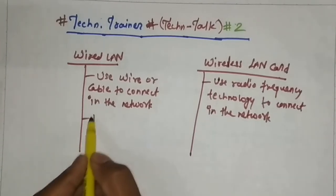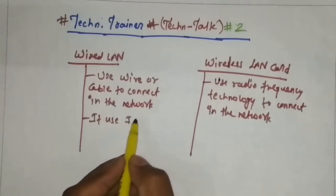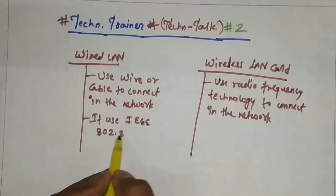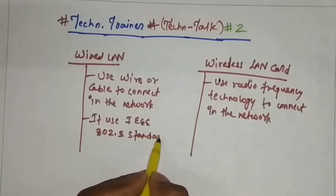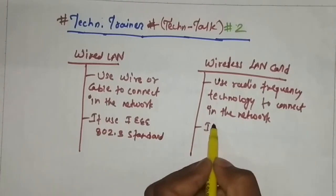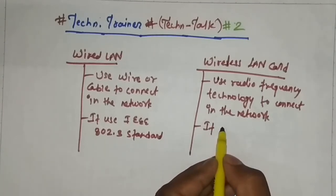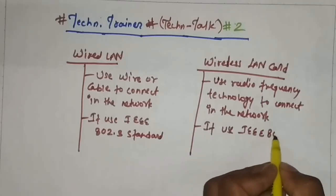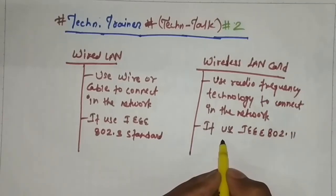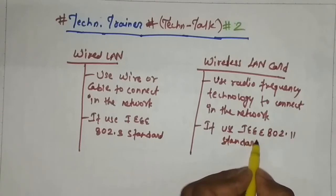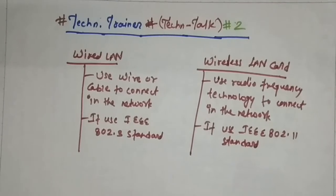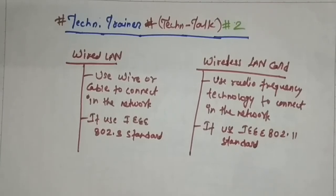The wired LAN card uses IEEE 802.3 standard, and the wireless LAN card uses IEEE 802.11 standard. Basically, IEEE is a multinational company which provides standards to network devices.